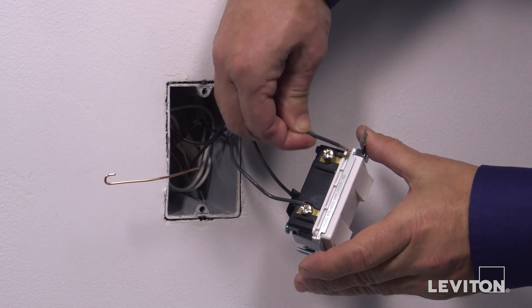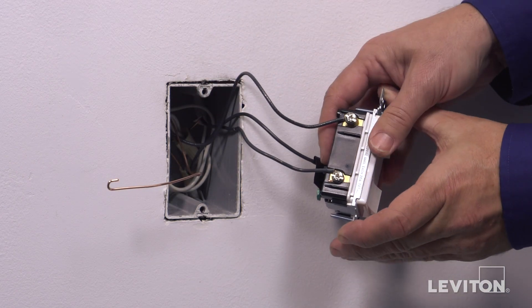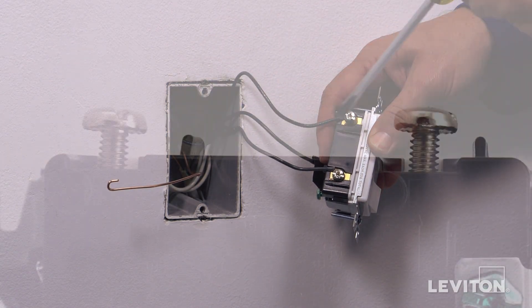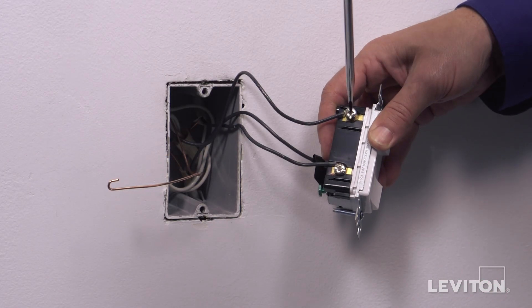Loop the other black wall box load wire clockwise three-quarters of a turn around the remaining silver terminal screw. Tighten firmly.